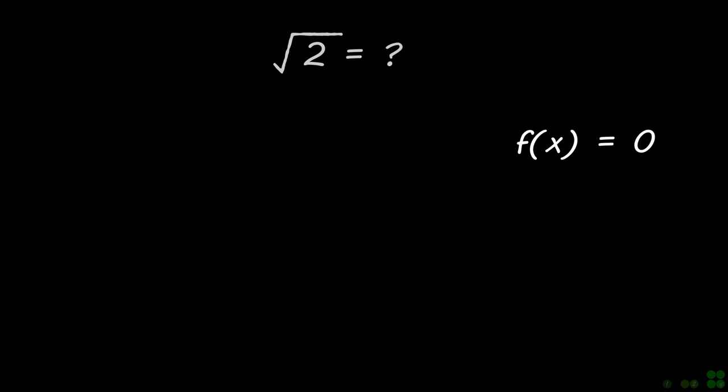First of all, we need to write the given problem in the form of f of x equals 0. For this, let's say x equals square root of 2. Now rearrange this to obtain an equation in the form f of x equals 0. So we found our function f of x as shown.